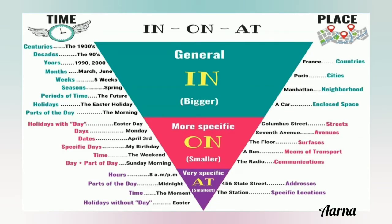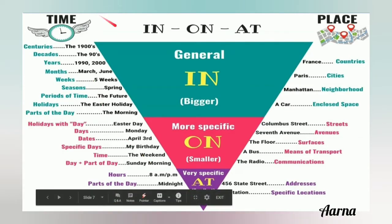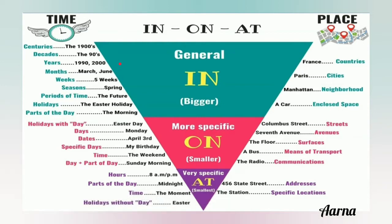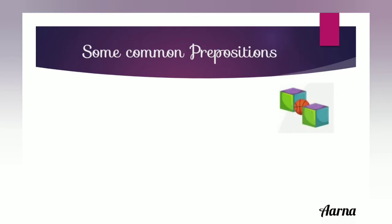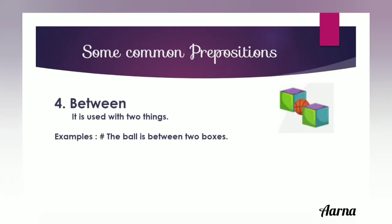Here is a simple diagram that shows 'in', 'on', and 'at' with different cases. The fourth preposition is 'between'. It is used with two things. For example: 'The ball is between two boxes' — the ball is between two things, so we use 'between'.